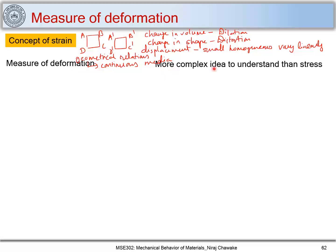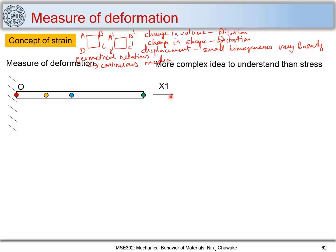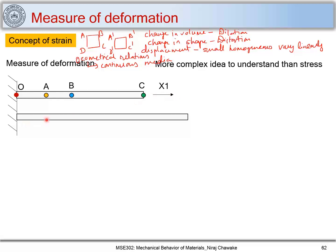The concept of strain is more complex to understand than stress. Let us take an example of a member which is hinged at one end at point O, and we stretch it along X1. Let me mark three points A, B, C on this member. When we pull this member along X1 using a tensile force, it gets elongated. Point O remains fixed, while point A displaces to some extent along X1, point B displaces further, and point C displaces to a maximum extent.